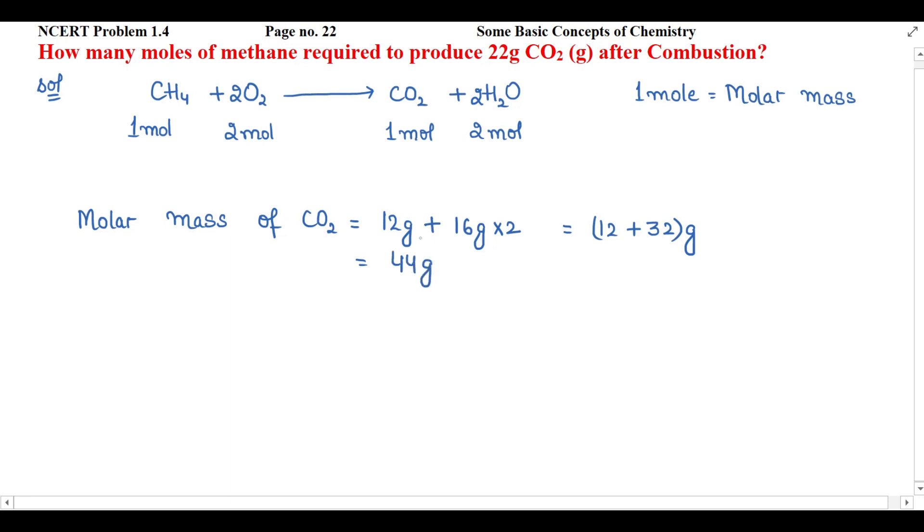Now we'll apply the unitary method. 44 grams of carbon dioxide is produced by the combustion of methane equal to 1 mole. Now 22 grams of carbon dioxide is produced by combustion of methane equal to...